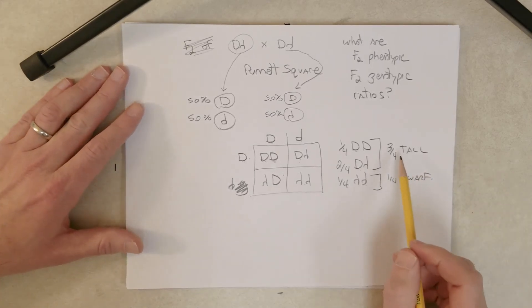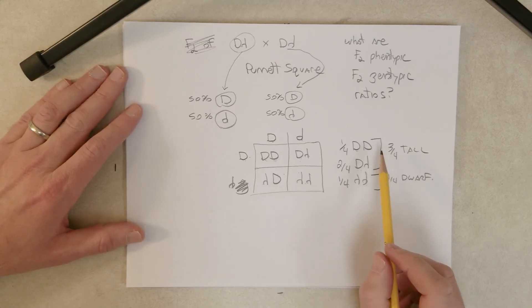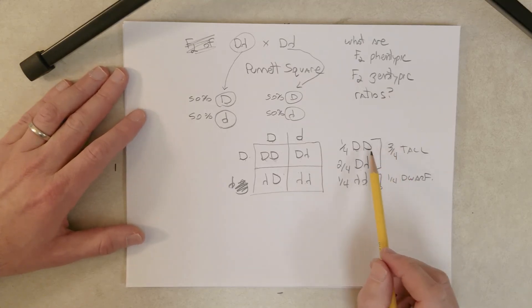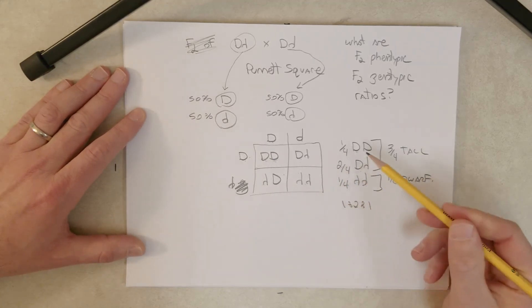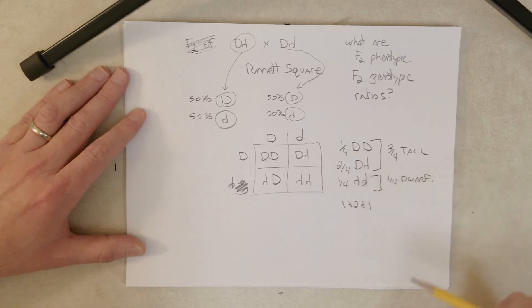So this is it. This is Mendel's F2 genotypic ratio: one quarter, two quarters, one quarter, so one to two to one—one homozygous dominant to two heterozygous to one homozygous recessive.